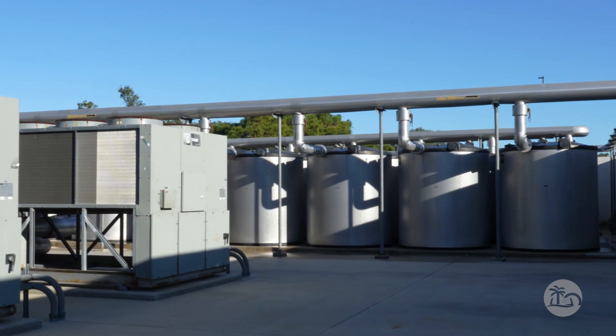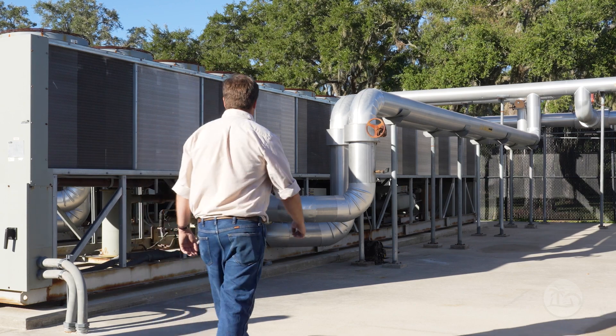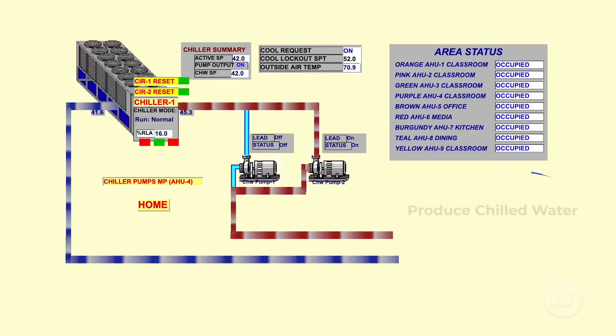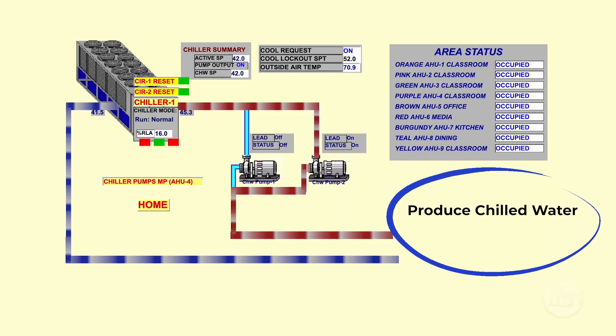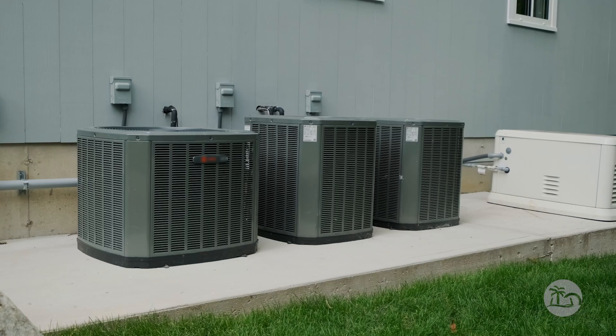So a chiller is what we would call an electromechanical piece of equipment. Its function in life is to produce chilled water in the area of 40 to 50 degrees Fahrenheit. It uses the mechanical compression refrigeration system to do that just as a car air conditioner or a residential air conditioner. It's just a lot bigger and produces water.